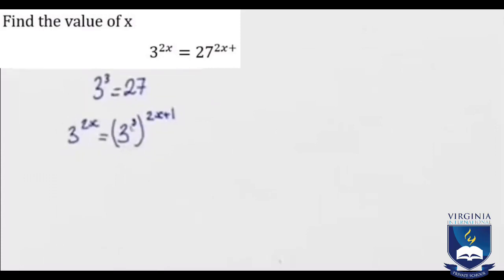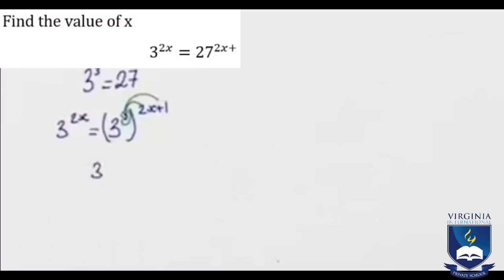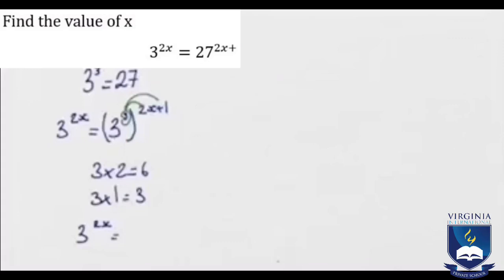In order to simplify, we multiply 3 by 2x and by 1. Now 3 times 2 is equal to 6, and 3 times 1 is equal to 3. So we have 3 to the power of 2x equals 3 to the power of 6x plus 3. Since the bases are the same, the exponents are equal.